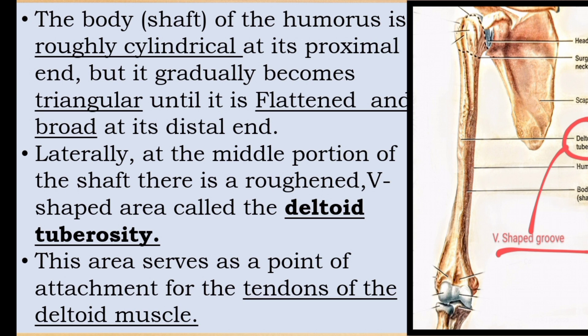The deltoid tuberosity serves as the point of attachment for the tendons of the deltoid muscles. Laterally at the middle portion of the shaft, there is a rough V-shaped area called the deltoid tuberosity. The body or shaft of the humerus is roughly cylindrical at its proximal end, but gradually becomes triangular and is flattened and broad at its distal end.